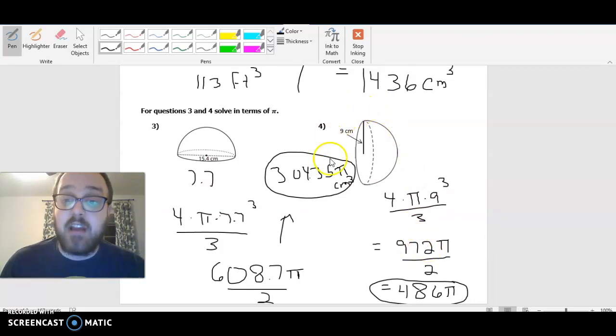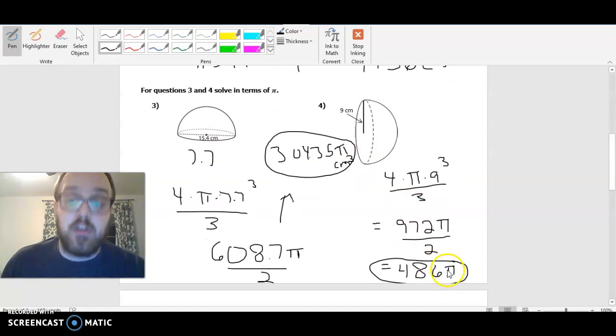But again, that's the volume of an entire sphere. This is a hemisphere or a sphere cut in half. So we have to divide it by 2 and we get 486π as our answer. So the answer to what this hemisphere's volume would be would be 486π centimeters cubed.